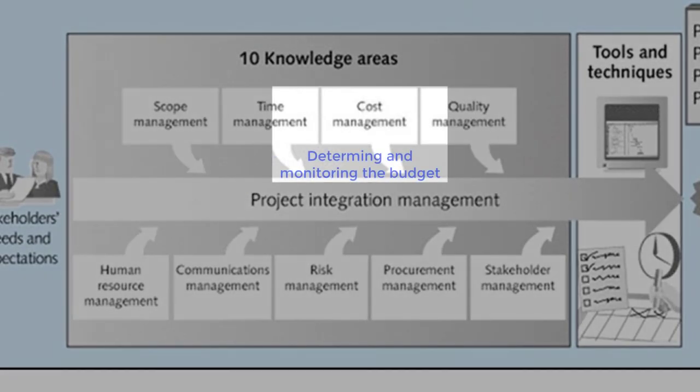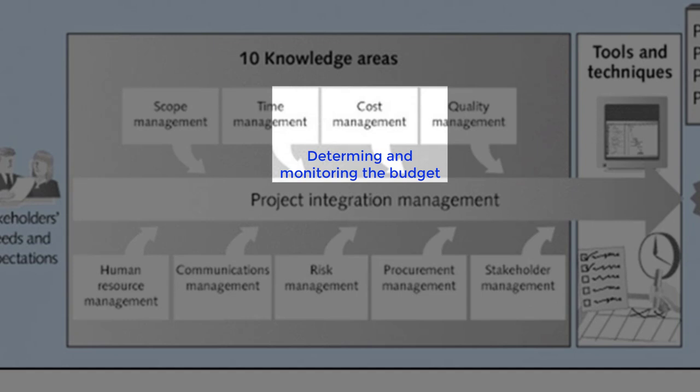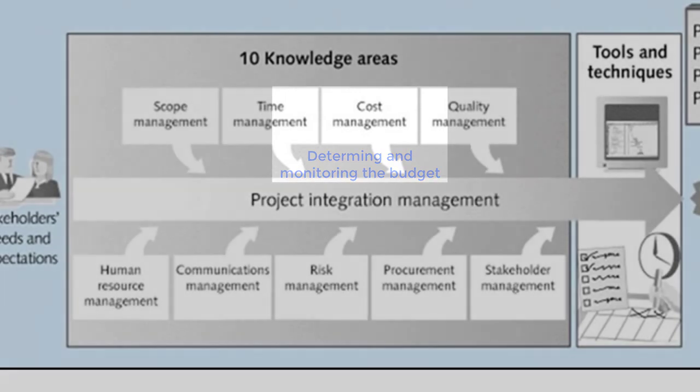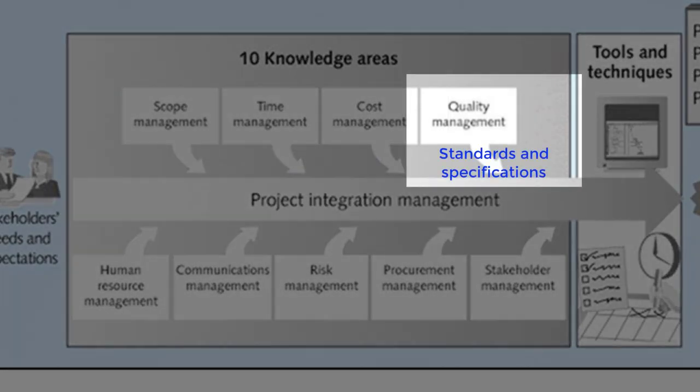Cost management is working out the project costs and budget, then making sure the project stays within its approved budget. Quality management is making sure that the project is delivered to the correct standard or specifications. For example, if the kitchen specifications state stainless steel appliances, you will want to ensure you receive stainless steel appliances.